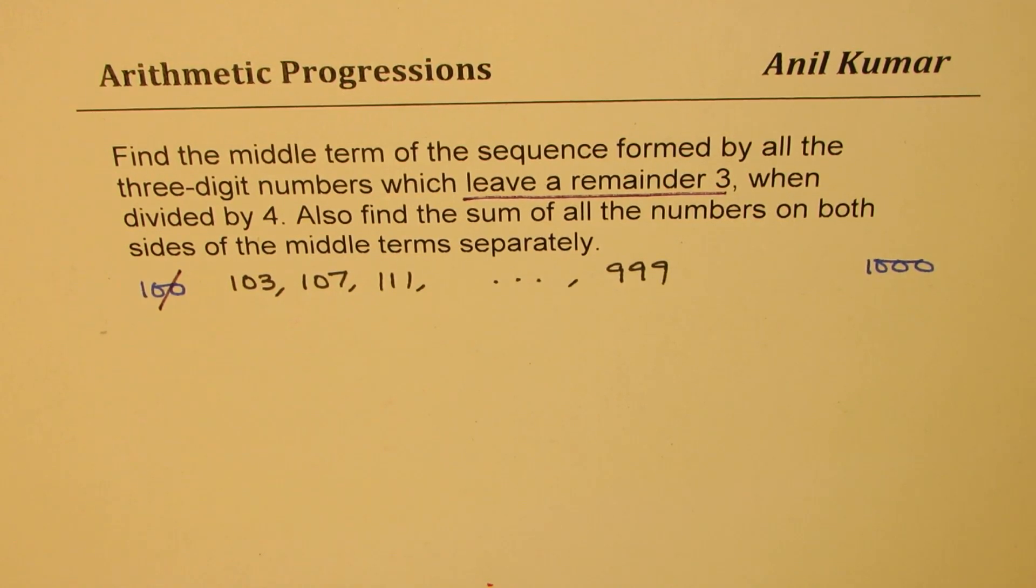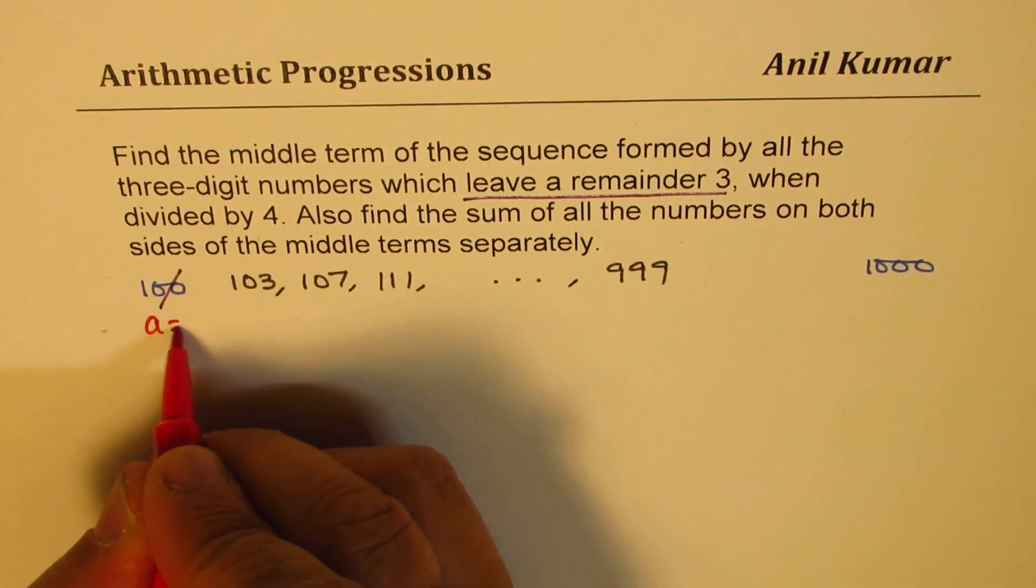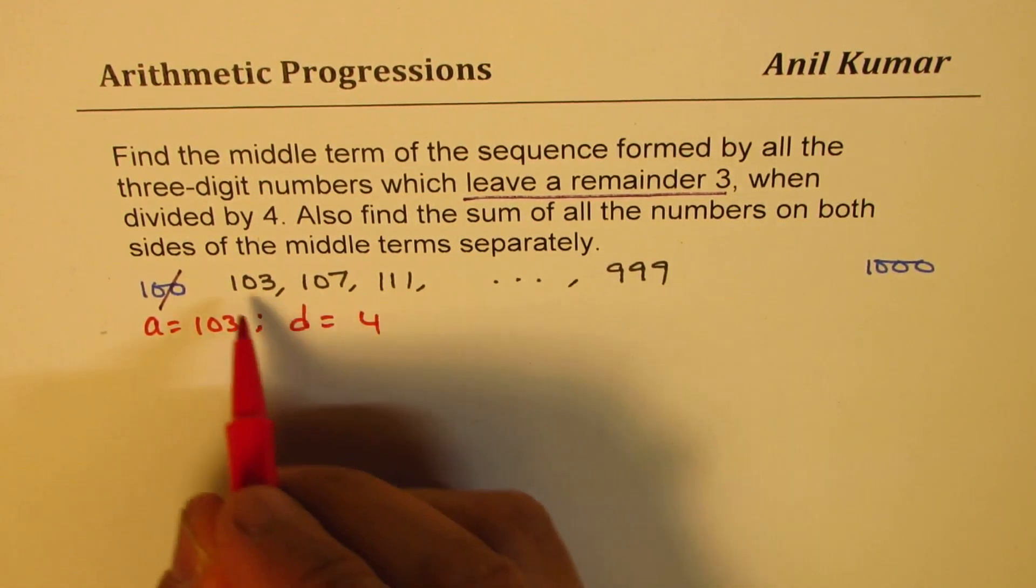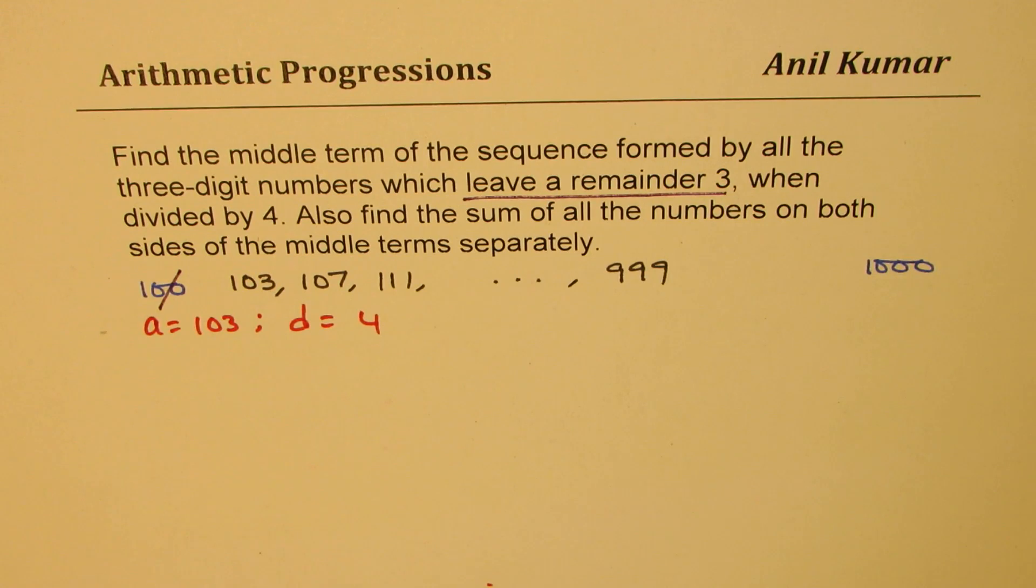Now, in this series, we know a is equal to 103 and d is equal to 4, since the common difference is 4.